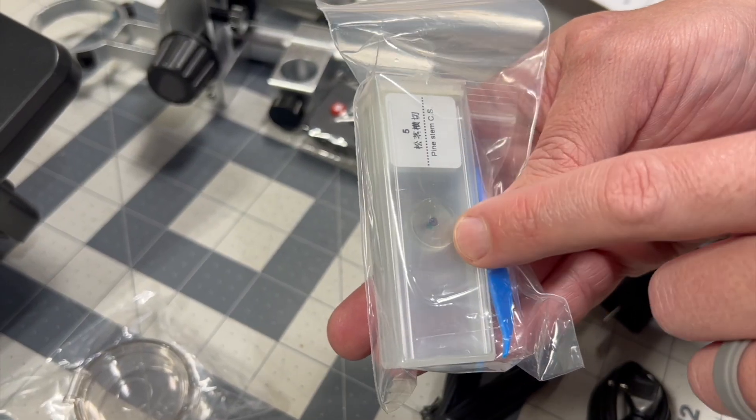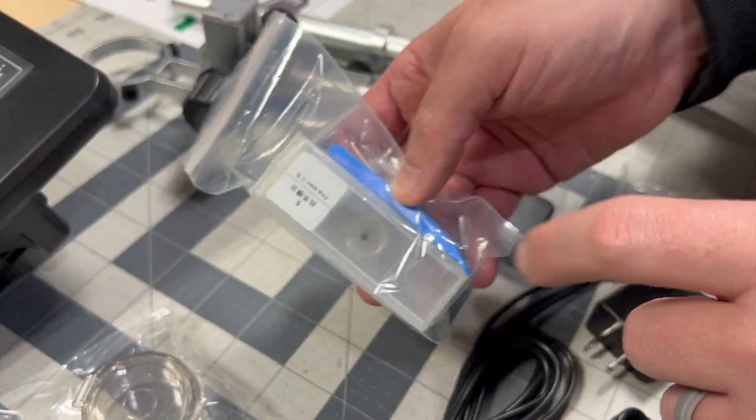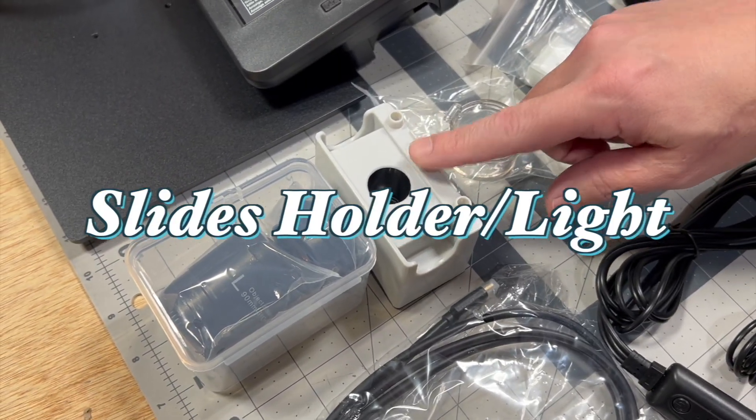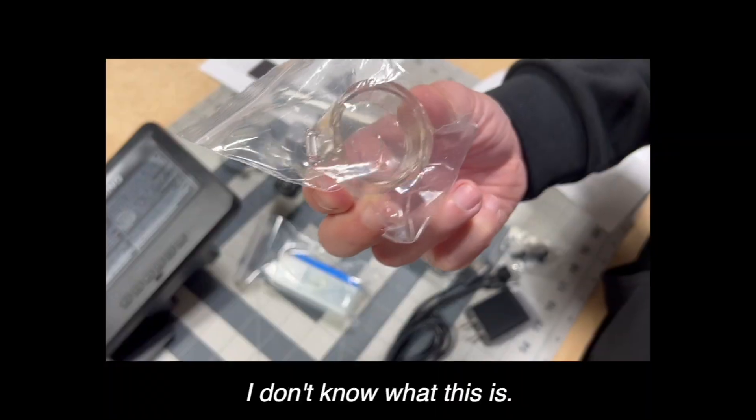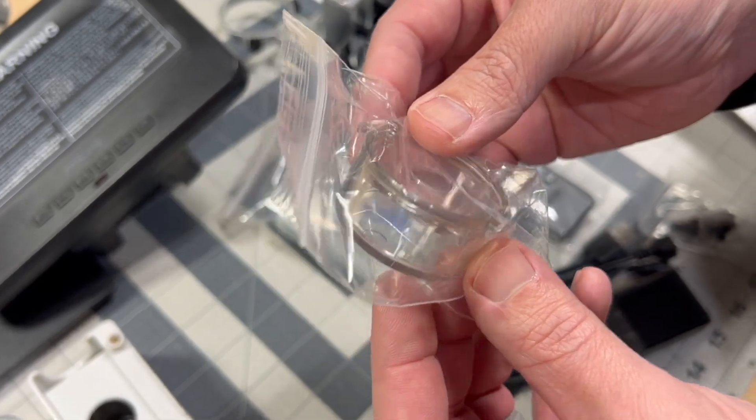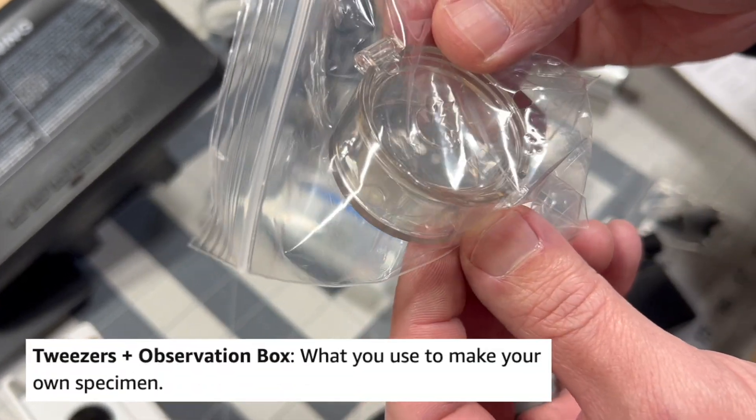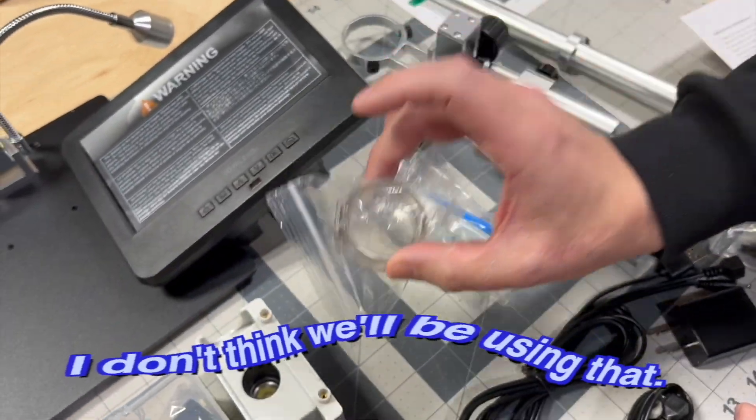And then it actually comes with some sample slides. That's pretty neat. So the top one here is a pine stem. So we can kind of look through the microscope and see what a pine stem looks like up close. A little light box here for slides. You can put your slides on there. It comes with a little bug box. I guess if you put a bug in there and you want to look at it without it crawling away, that's that. I don't think we'll be using that.